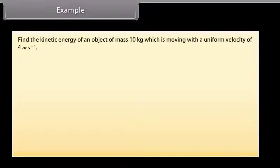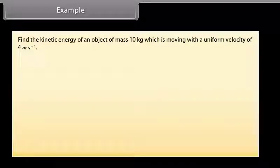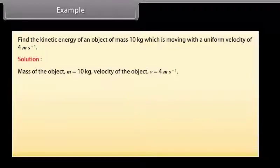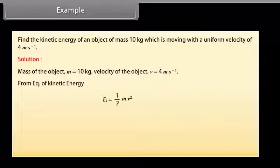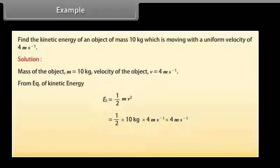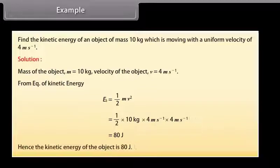Example: Find the kinetic energy of an object of mass 10 kg moving with a uniform velocity of 4 m/s. Solution: Mass M = 10 kg, velocity V = 4 m/s. KE = ½ × 10 × 4 × 4 = 80 Joules. Hence the kinetic energy of the object is 80 Joules.